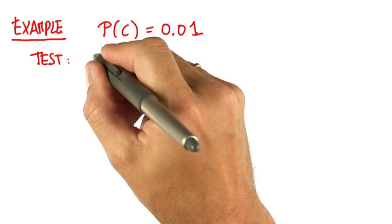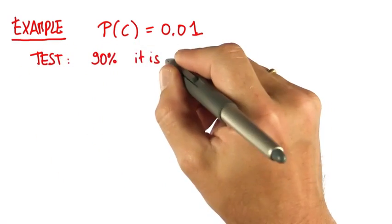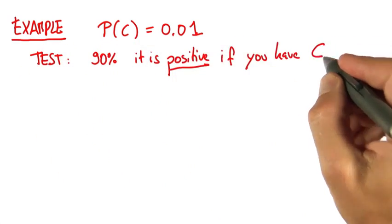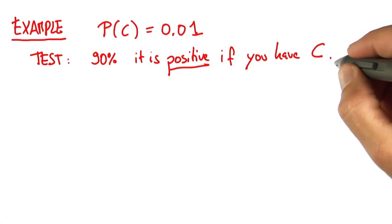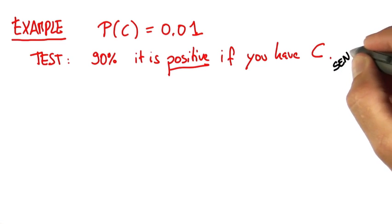And the test for this cancer, with 90% chance, it is positive if you have this cancer, C. That's usually called the sensitivity of a test.